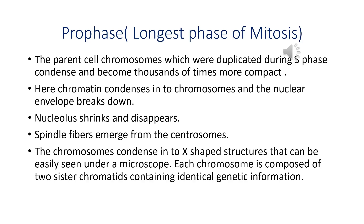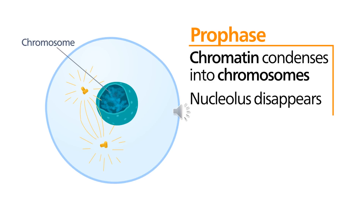In prophase, the chromatin condenses into chromosomes and the nuclear envelope will break down. The nucleolus will shrink and disappear. Spindle fibers will emerge from the centrosomes. The chromosomes condense into X-shaped structures which can easily be seen under the microscope, and each chromosome is composed of two sister chromatids containing identical genetic information. The most important points of prophase are: the nuclear envelope breaks down, the nucleolus shrinks and disappears, and spindle fibers emerge from the centrosomes.